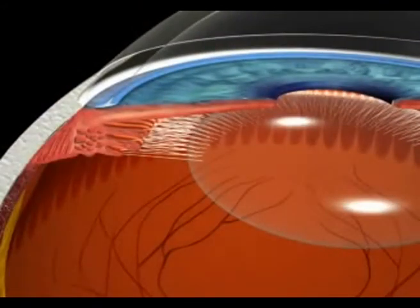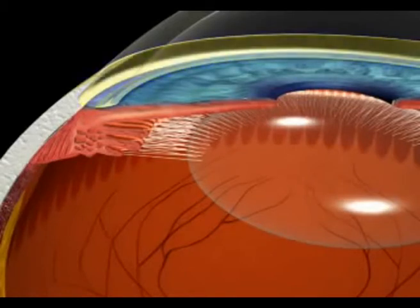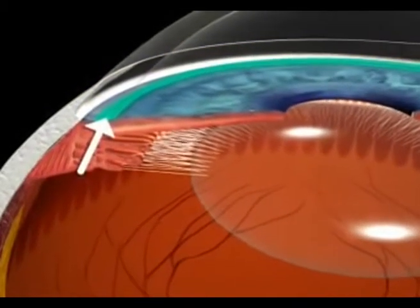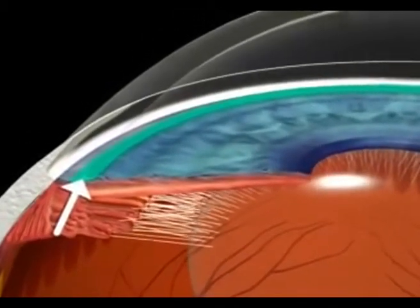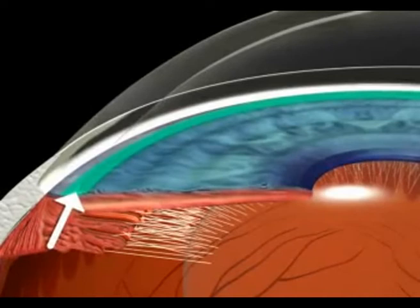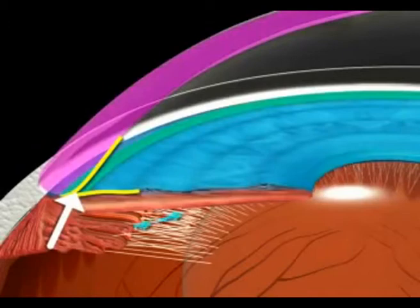Open-angle glaucoma occurs when the eye's drainage system becomes clogged over time. A part of this system, called the trabecular meshwork, is a tiny spongy tissue that allows fluid to leave the eye. This structure is situated in the eye's angle where the iris and cornea meet.